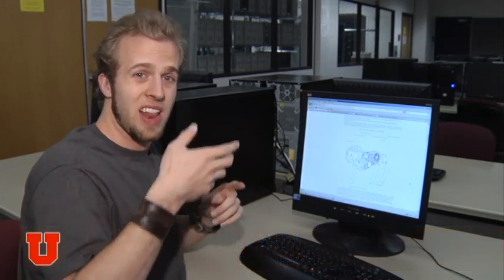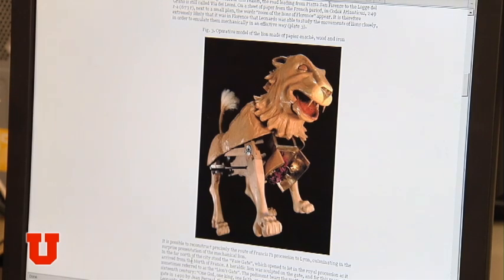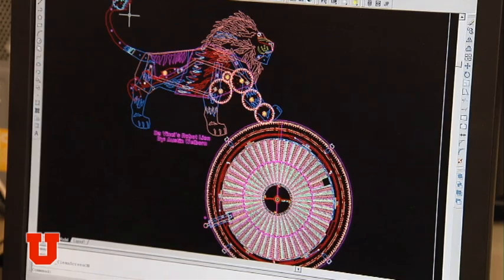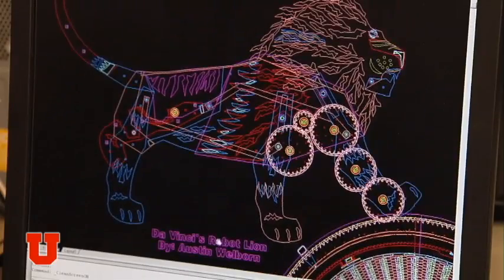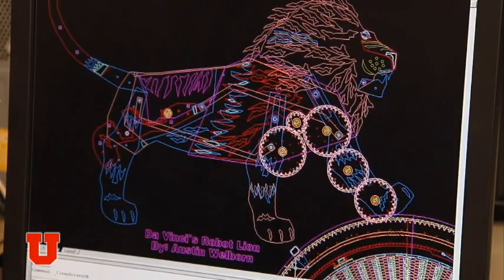The first design I did was Leonardo da Vinci, the mechanical lion. People have made actual replicas of this lion, but they've had problems with gravity and friction. I decided to use this design in a MEMS, in a micro scale of it, where the gravity and the friction doesn't really apply there.